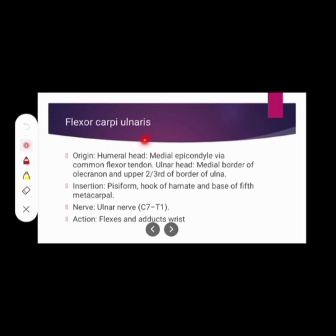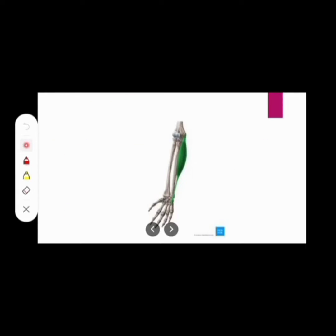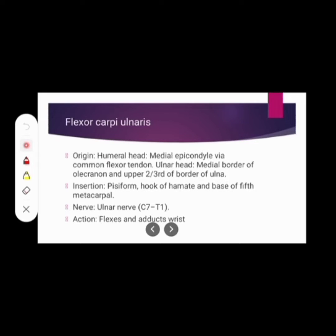The second muscle is flexor carpi ulnaris. It has two heads: humeral head and ulnar head. The origin of the humeral head is from the medial epicondyle via common flexor tendon. The origin of the ulnar head is from the medial border of olecranon and upper two-thirds of the border of ulna. Insertion: pisiform, hook of hamate, and base of fifth metacarpal. Nerve supply: ulnar nerve. Action: involved in wrist flexion and wrist adduction.